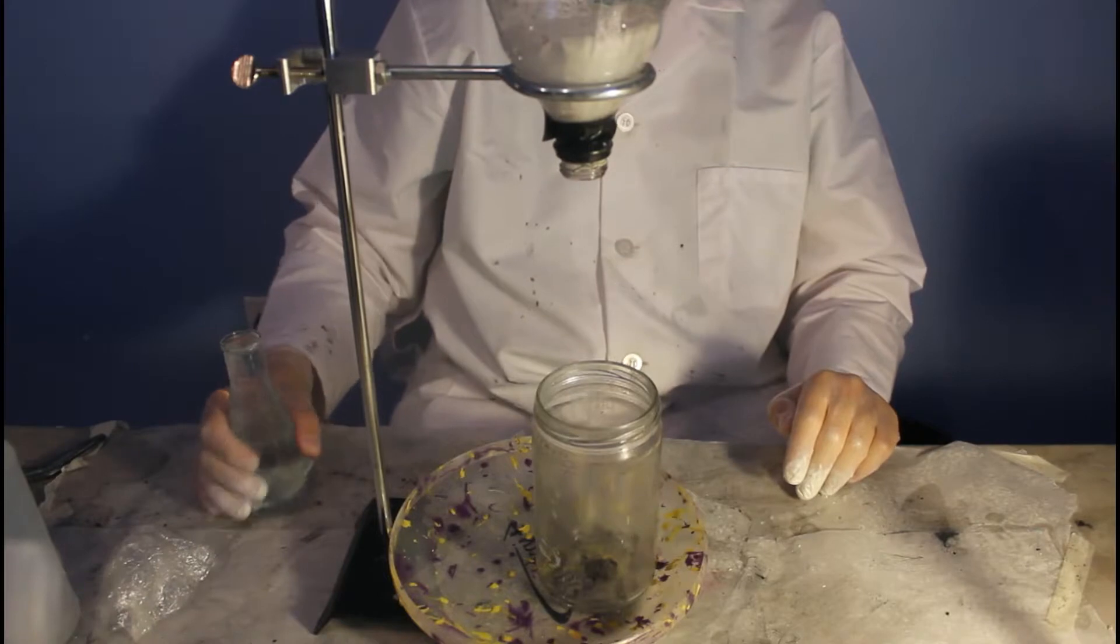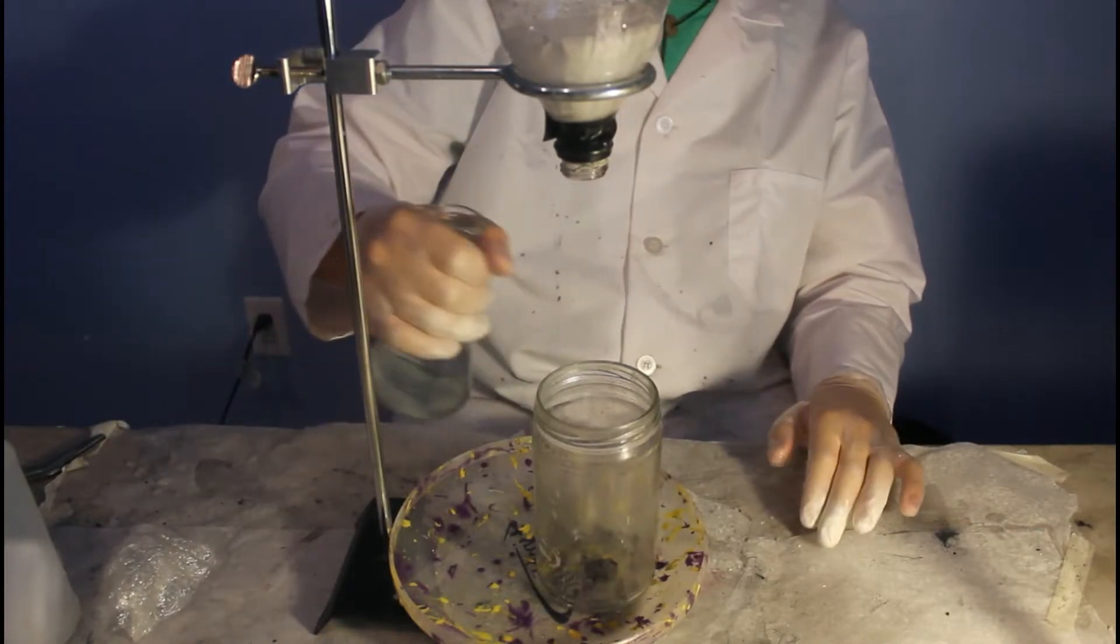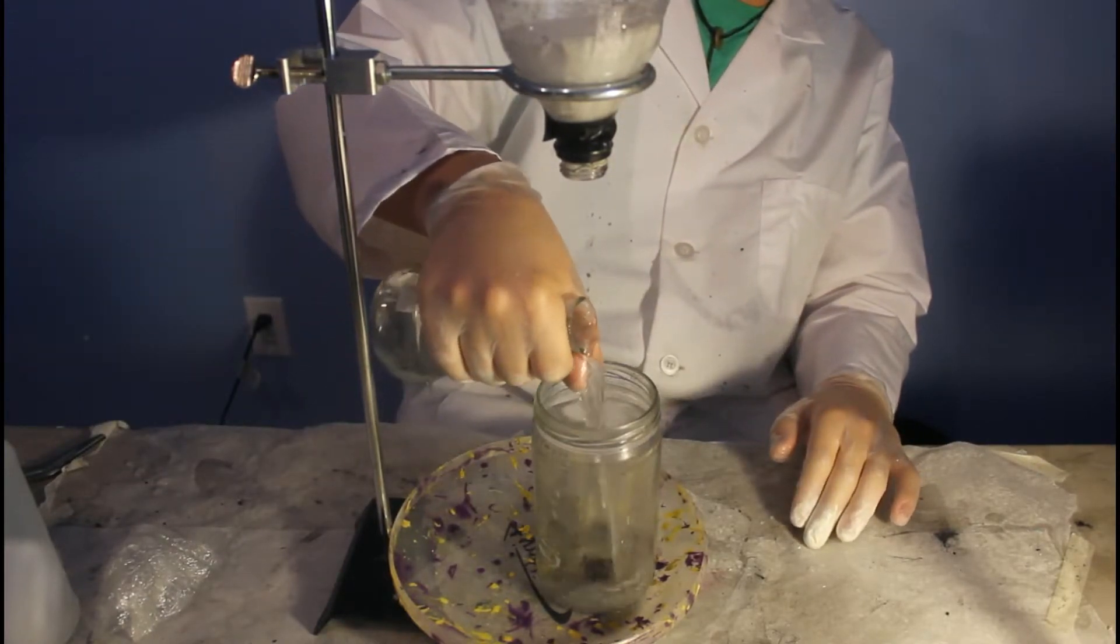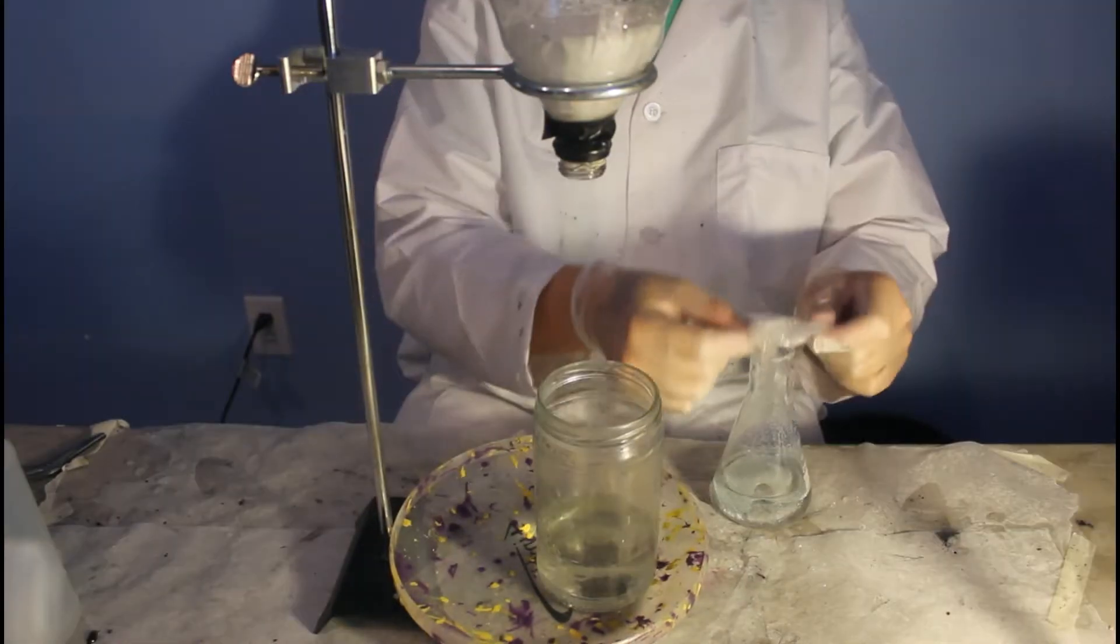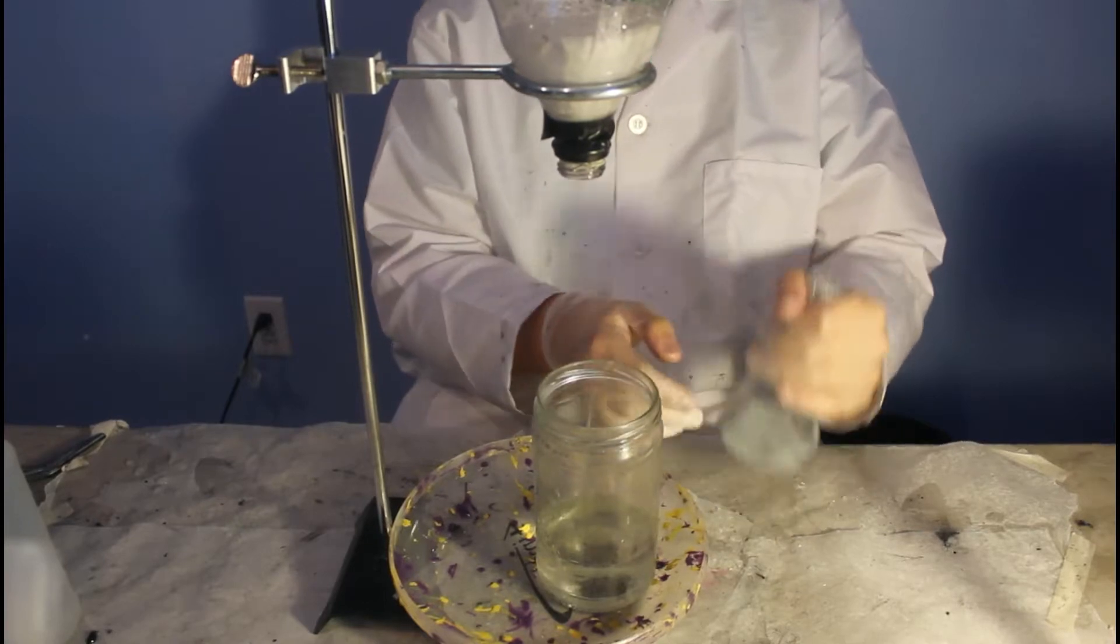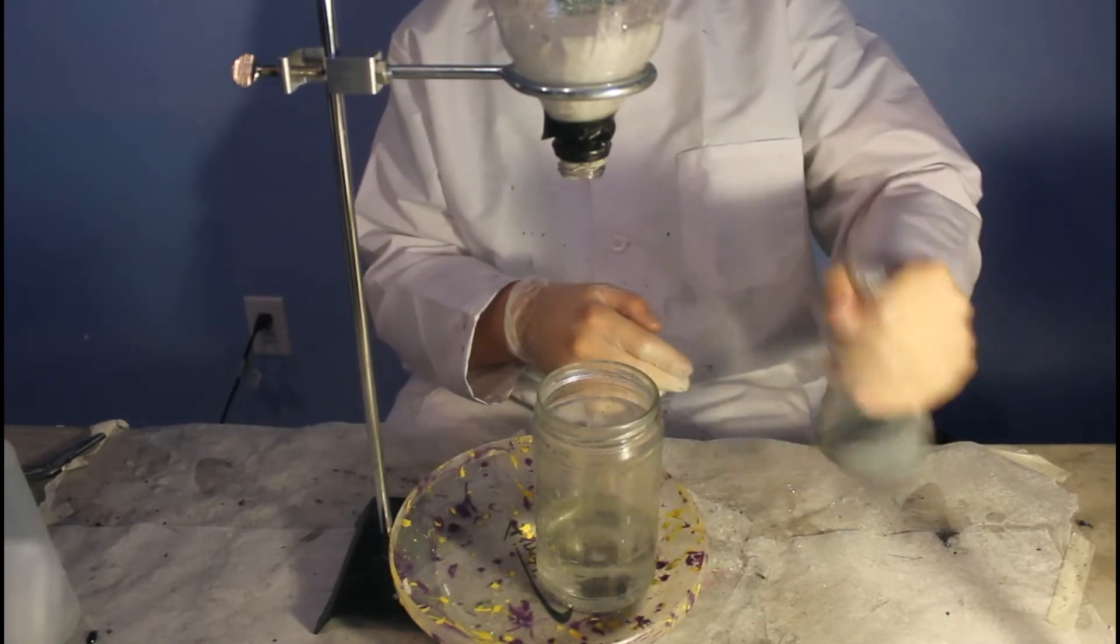The flask is uncapped and most of the water is decanted off of the top. Plastic wrap is applied to the top and the flask is shaken to get as much zinc in suspension as possible.